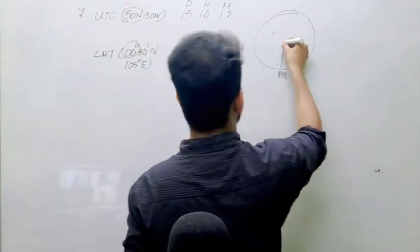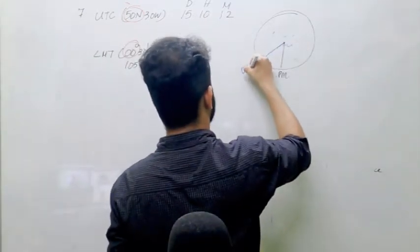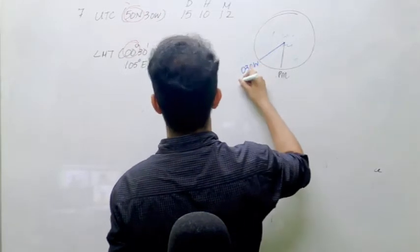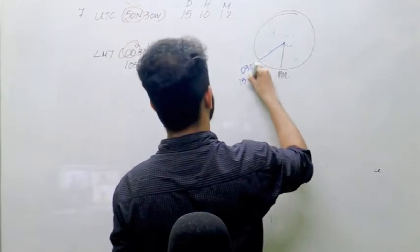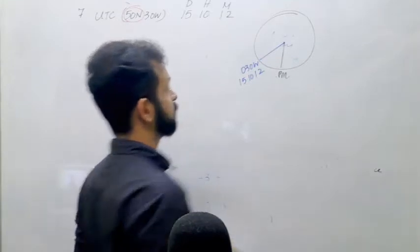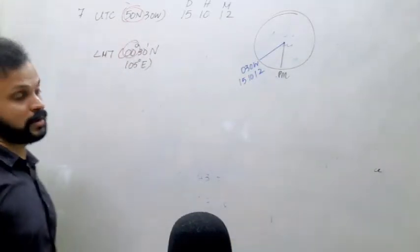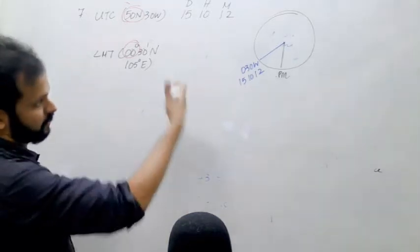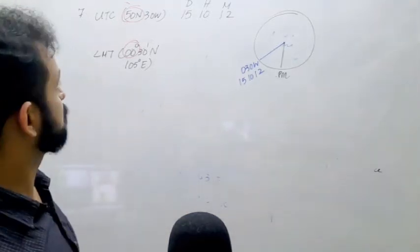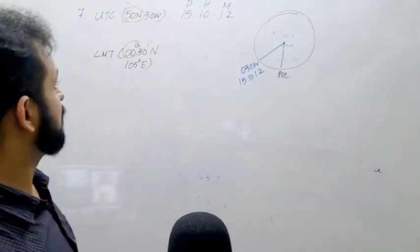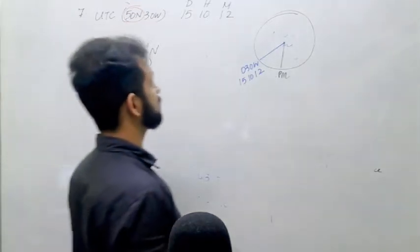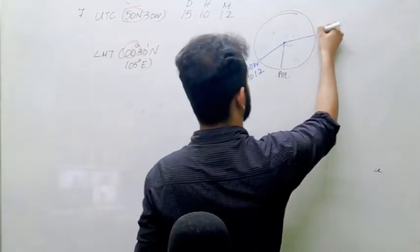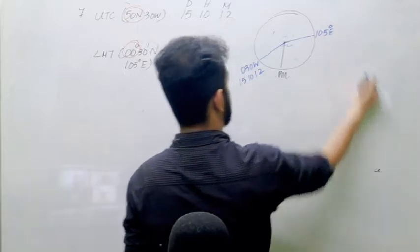So 30 degrees west is here and the UTC there is 151012. 15th of December, 1012. I am not marking December here because it is not changeable after the calculation. You are asked to find out LMT at 105 degrees east. That is somewhere here. I have to find LMT here.